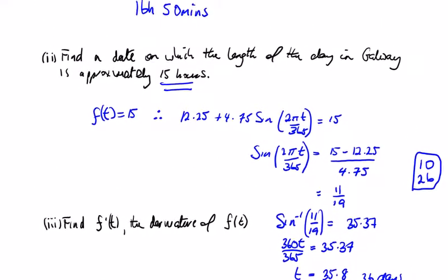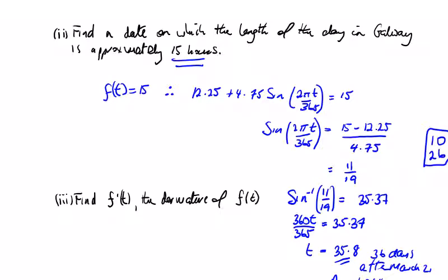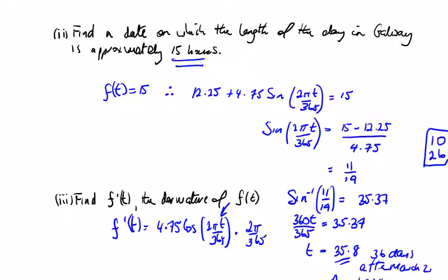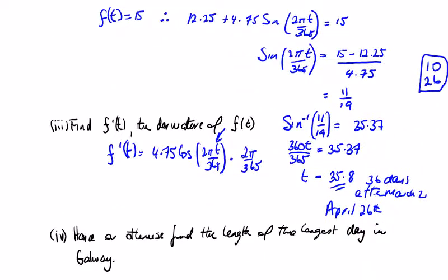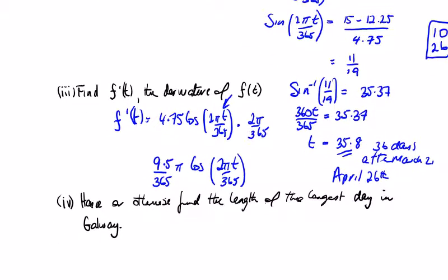Find f'(t), the derivative of f(t). Since sine differentiates to cosine, we get f'(t) = 4.75 × cos(2πt/365) × (2π/365), which is the derivative of the angle by the chain rule. Tidying up, we can write this as (9.5π/365) × cos(2πt/365).